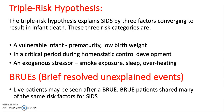The Triple Risk Hypothesis explains SIDS by three factors converging to result in infant death. The three risk categories are: A. A vulnerable infant — prematurity or low birth weight. B. A critical period during homeostatic controlled development. And C. An exogenous stressor such as smoke exposure, sleep position, or overheating.